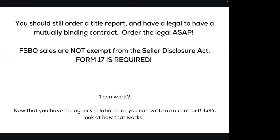You should still order a title report and have a legal description, because in order to have a binding mutual contract you do need to have that legal. So if you can get it ordered as soon as possible, make sure that's attached. For-sale-by-owner sales are not exempt from the seller disclosure act, so Form 17 is required even if these sales are done off-market.